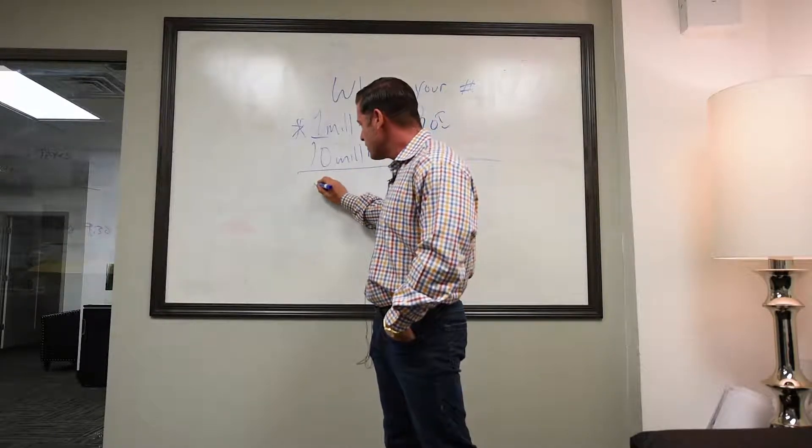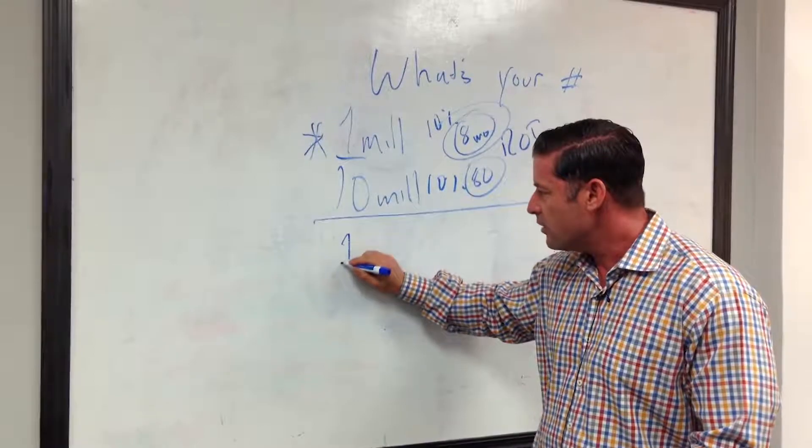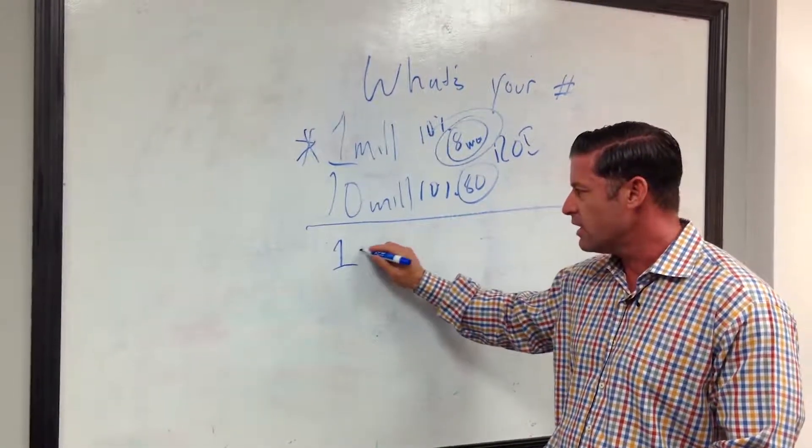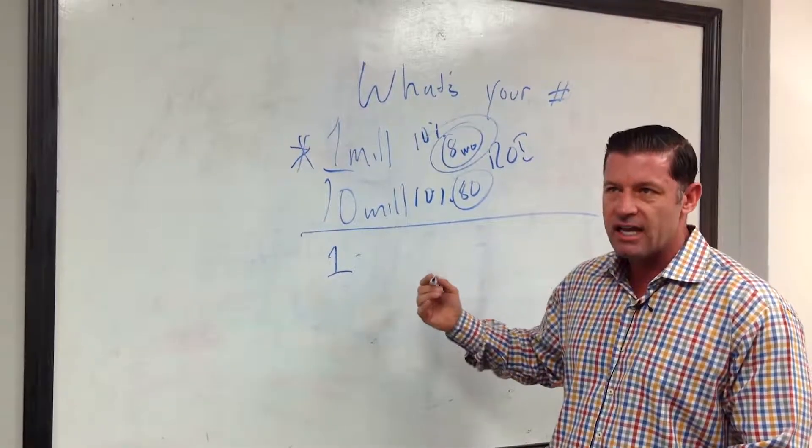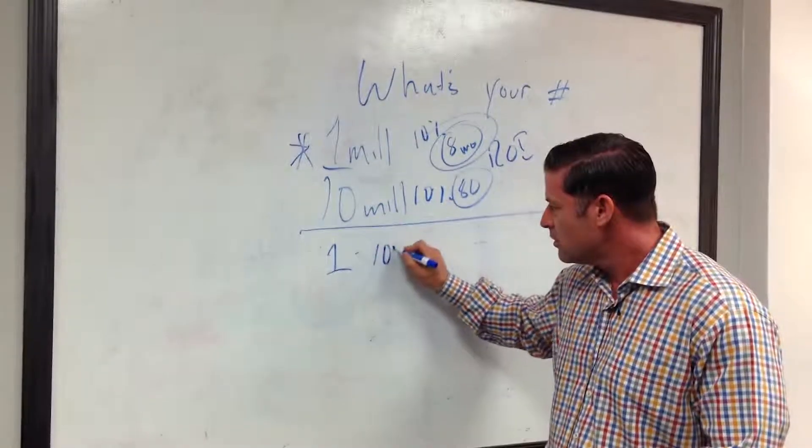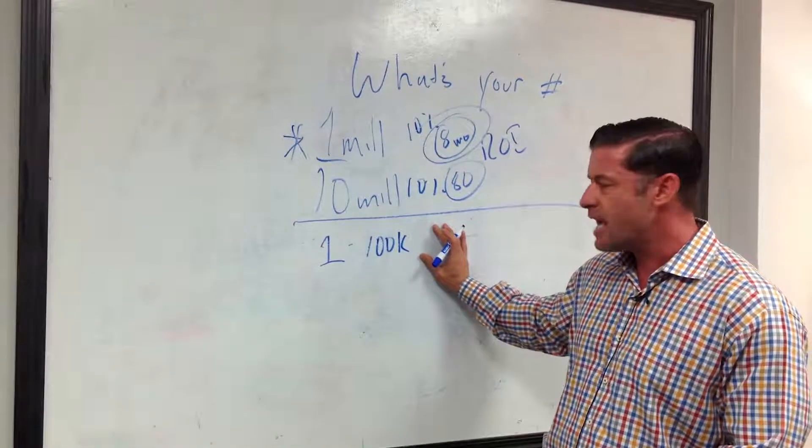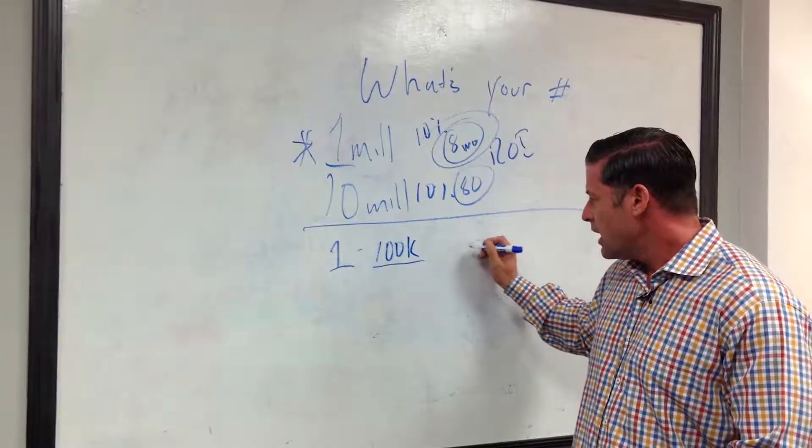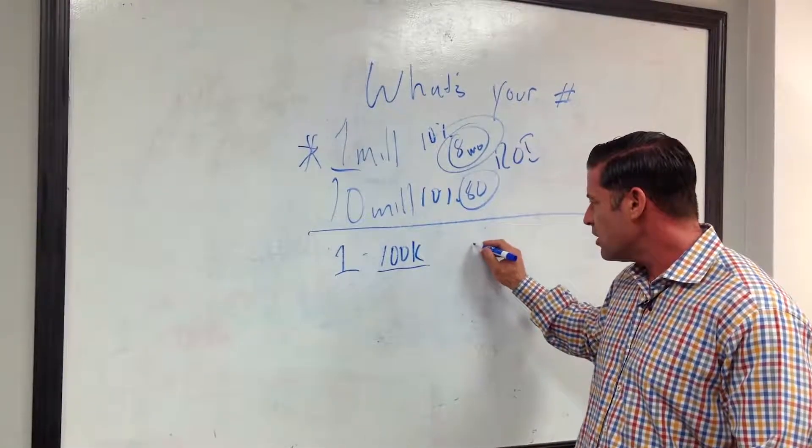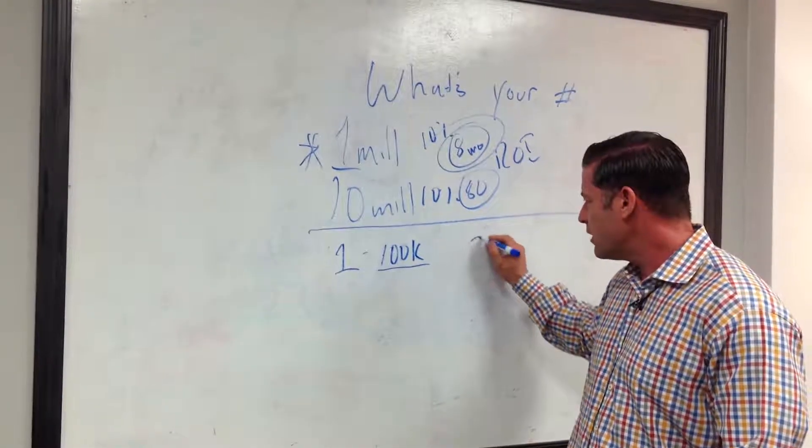So if you had one property, right? One house, one property, condo, whatever it is. And let's just say it's $100,000. You leverage it. You put minimum down. You leverage it. This is gonna be a rental. And let's say all in your payments are around 700 bucks.